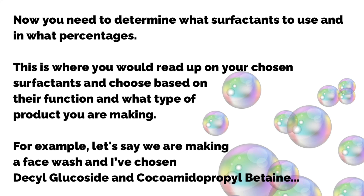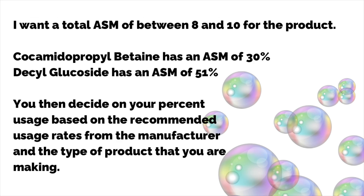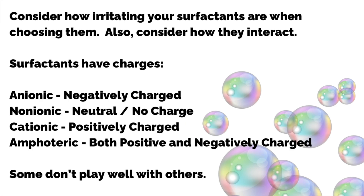Now you need to determine what surfactants to use and in what percentages. This is where you'd read up on your chosen surfactants and choose based on their function and the type of product you're making. For example, let's say we're making a face wash and I've chosen decyl glucoside and cocamidopropyl betaine, targeting a total ASM of between 8 and 10%. Consider how irritating your surfactants are and also how they interact.